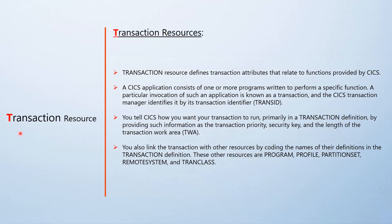What is a transaction resource? A transaction resource is nothing but a set of attributes which relate to the functions provided by CICS. As discussed earlier, a CICS application is made up of one or more programs which perform a specific business task. In order to invoke that application, that particular invocation is called a transaction.